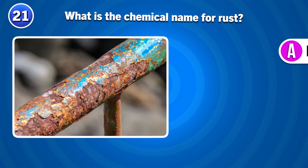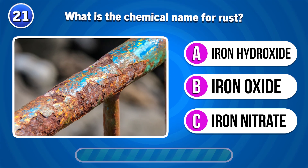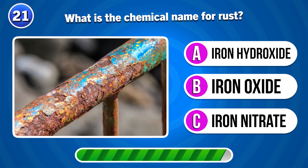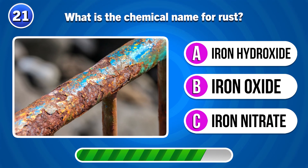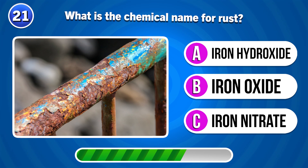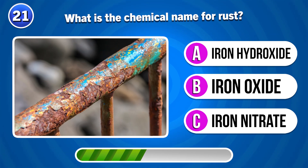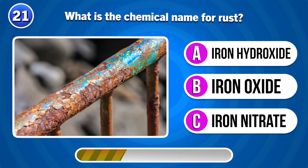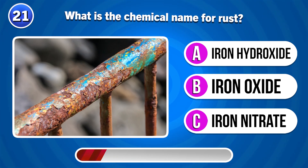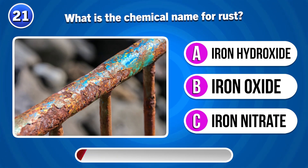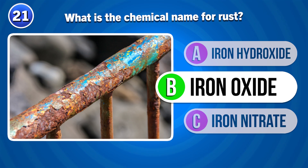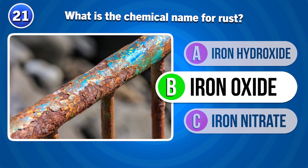What is the chemical name for rust? Iron oxide.